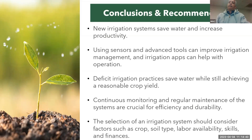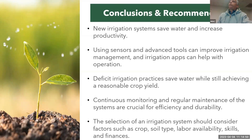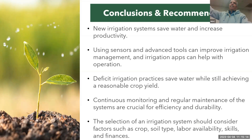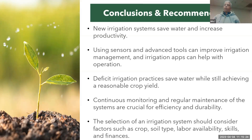Continuous monitoring and maintenance are essential — without them, high irrigation efficiency cannot be achieved. Selecting an irrigation system requires considering many factors including crop type, soil type, labor availability, operator skills, and finances.